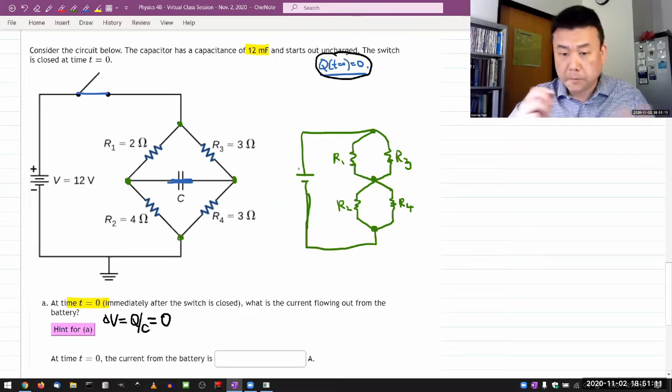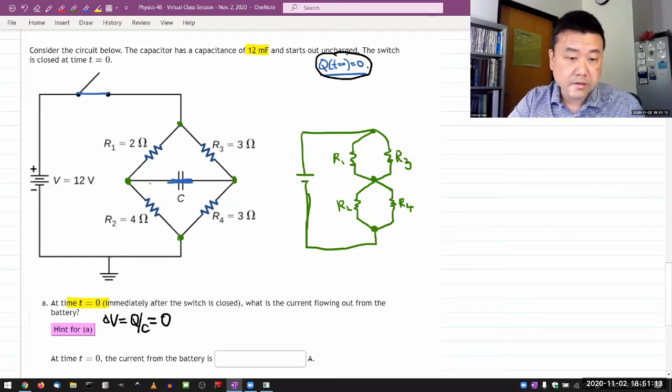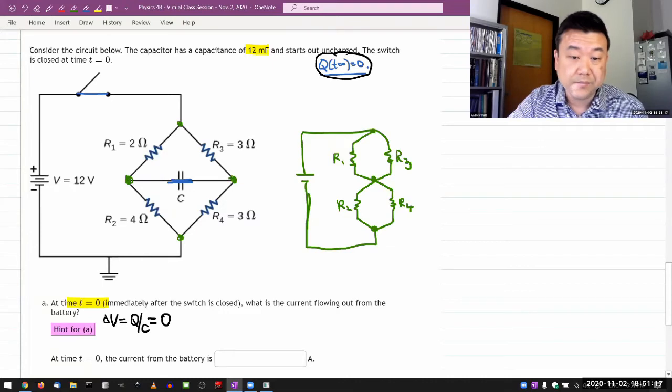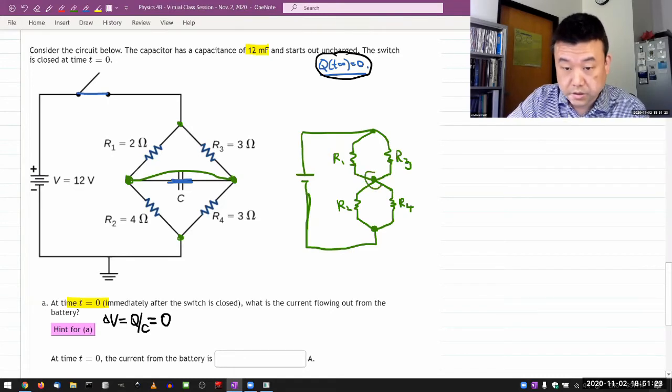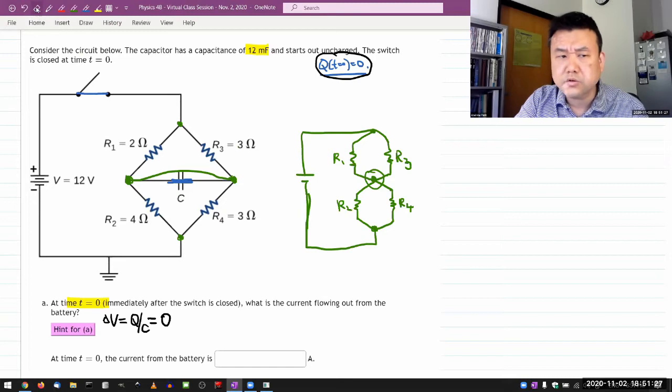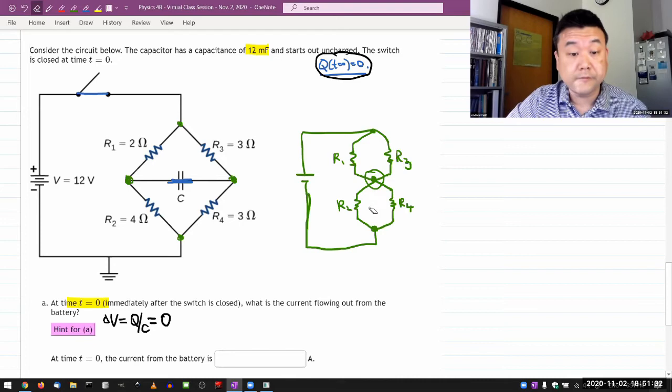So double check the topology. The kind of simplification you are seeing is that these two junctions, I can basically bring them together and make it into just one single connecting point, which is what I've done here. And as long as you are justified in treating the capacitor as a wire, this is perfectly fine.